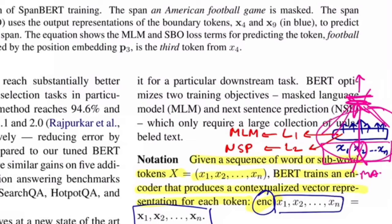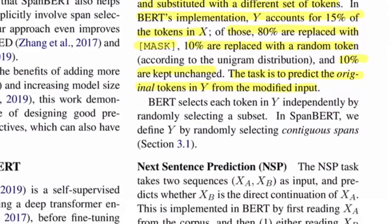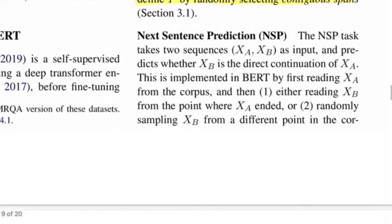A key difference: BERT selects each token Y independently by randomly selecting a subset, whereas in SpanBERT, Y is defined by randomly selecting contiguous spans — which we already discussed while reading the abstract.